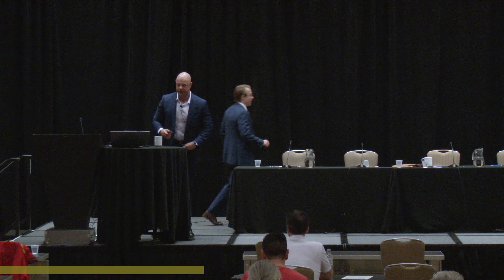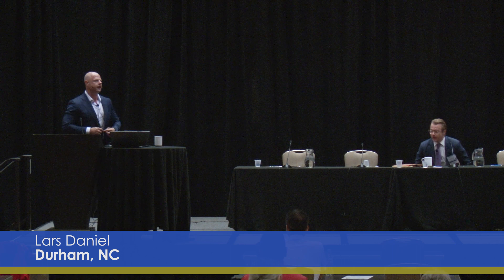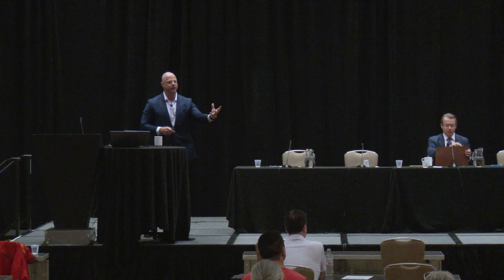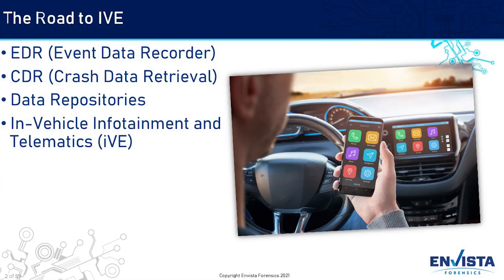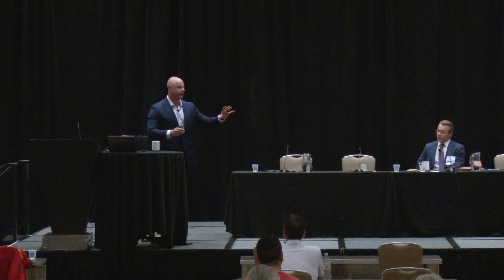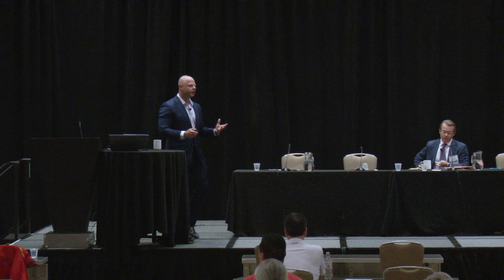I'm going to start us off with the technology this morning and then Jonathan is going to take over. As we begin, the first thing we're going to think about is there are different types of data coming from vehicles. You have data coming from event data recorders, then crash data retrieval is the method by which you gather that, the data repositories where the information actually gets to your vehicle, and the actual in-vehicle infotainment and telematics data that can be recovered. But first, when do you start seeing forensic evidence like this?